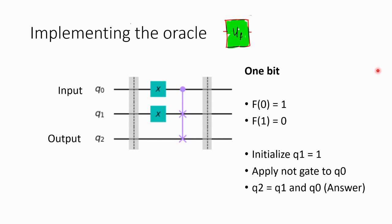Let us see how we can implement the oracle. Start with one bit — one bit means there are only two elements in the array because a bit can either be 0 or 1. So f(0) can be 1 or f(1) can be 1. For now let us take f(0) = 1.